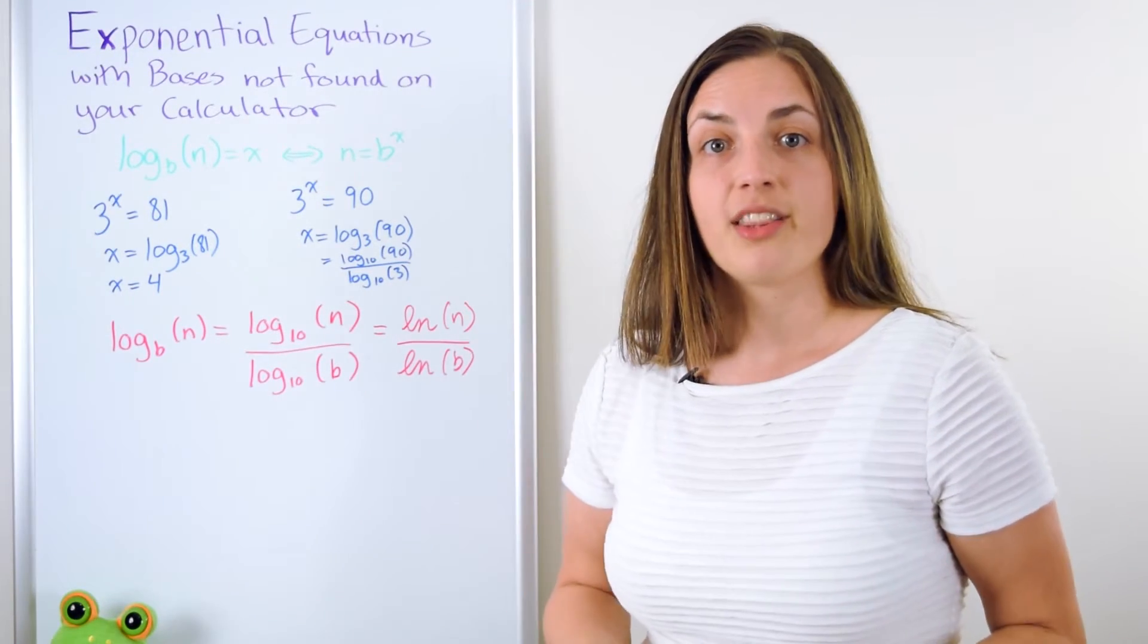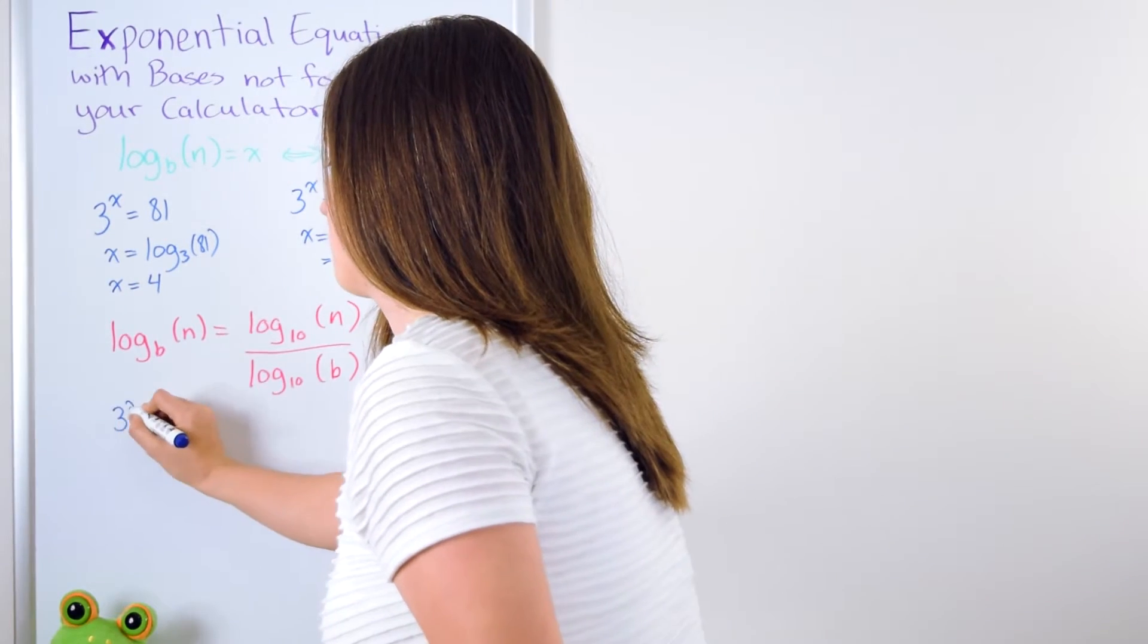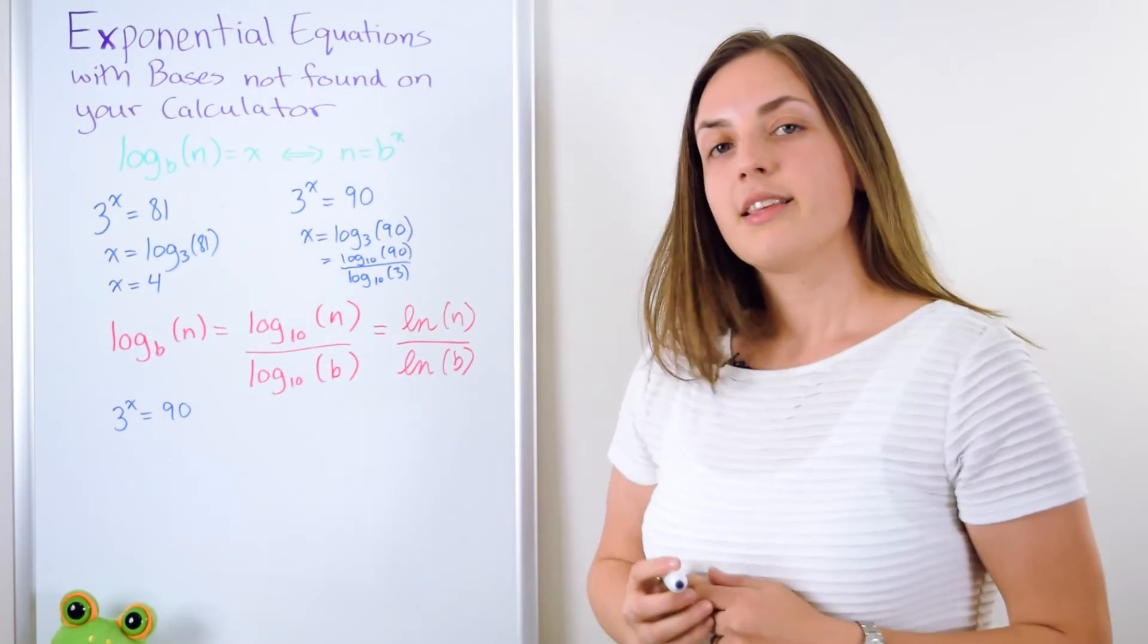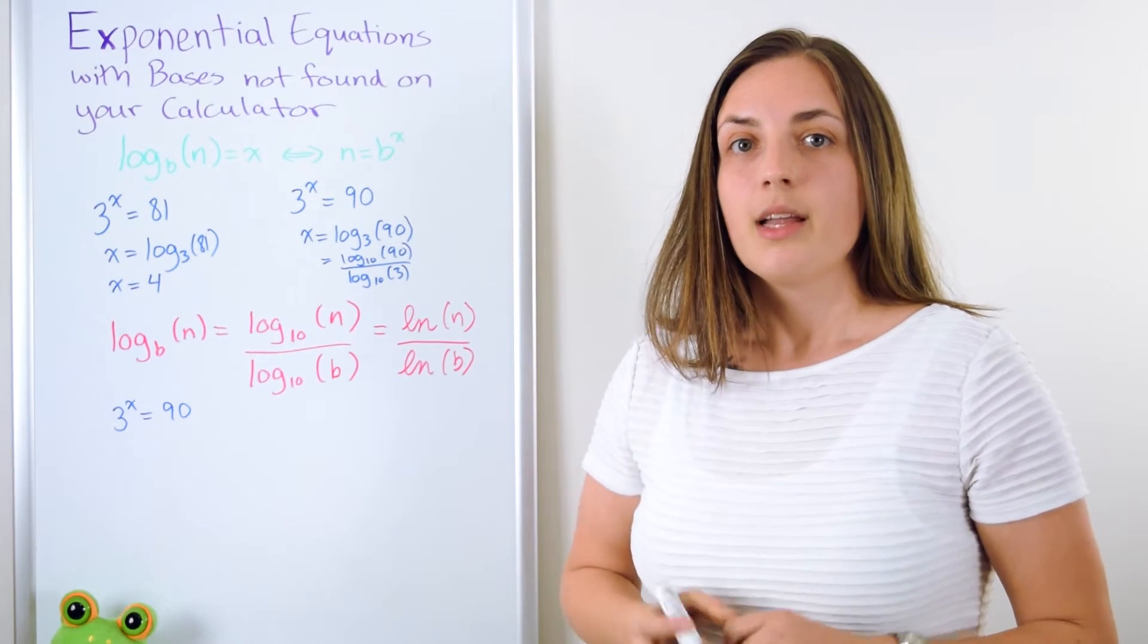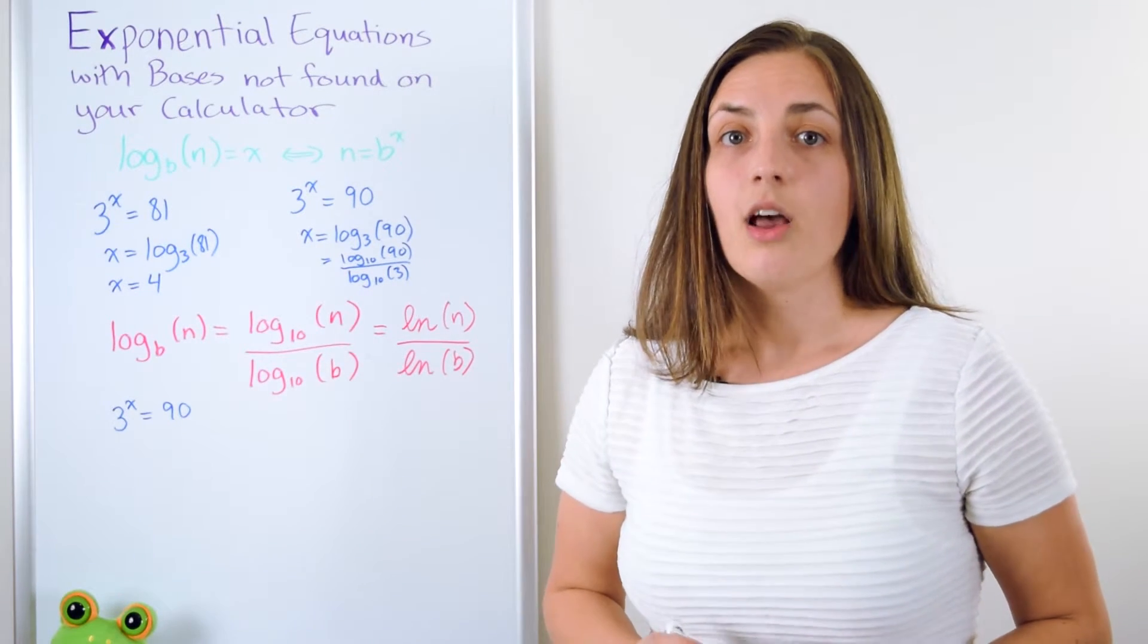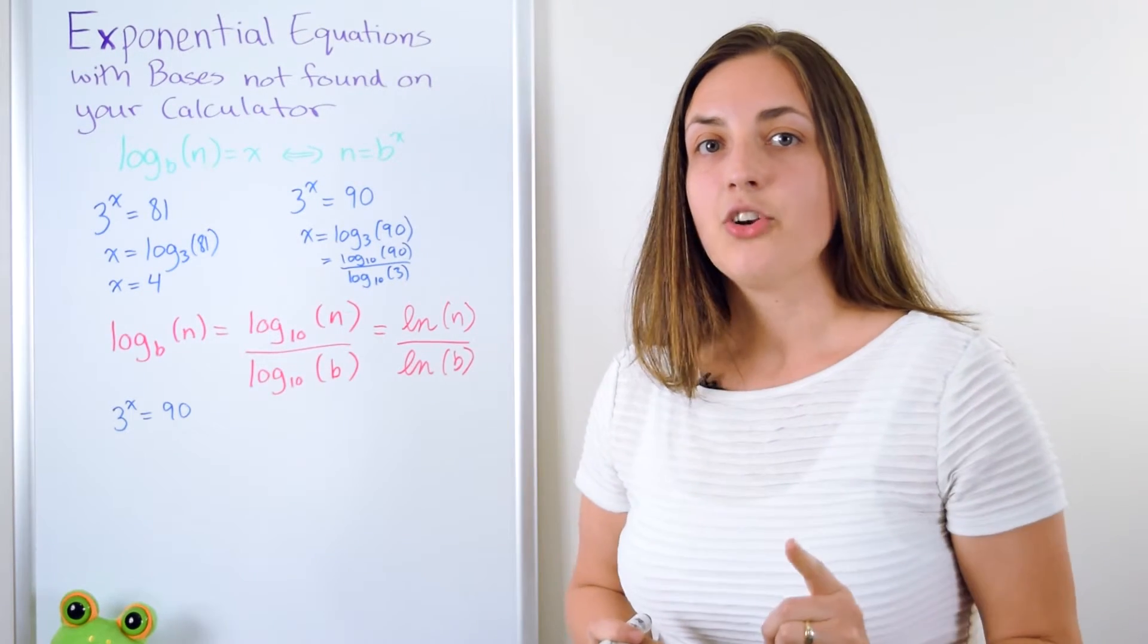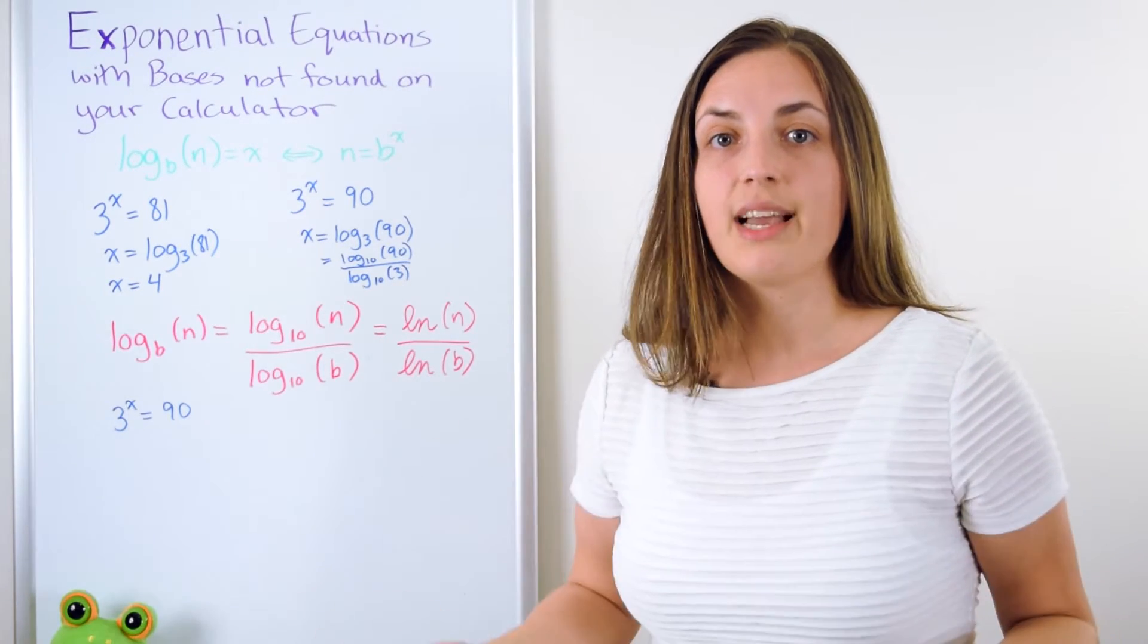Now I want to show you that there's a faster method to get to the same answer. This is our original equation. 3 to the power of x equals 90. Now instead of using the definition and going straight away into base 3, what I'm going to do is say, okay, I know that taking a logarithm of both sides is going to undo the exponentiation.